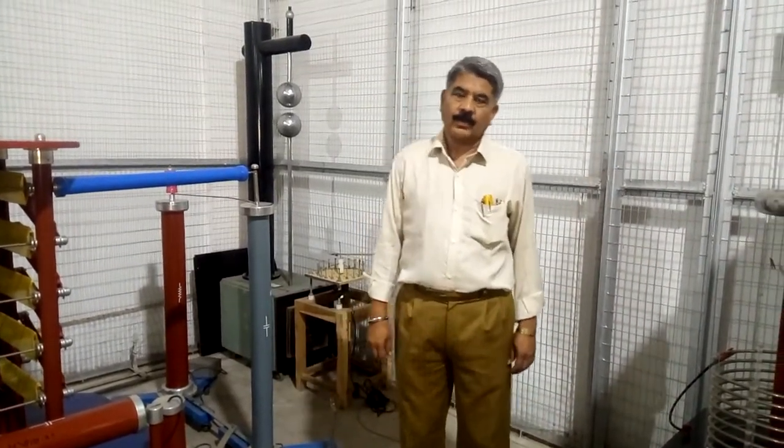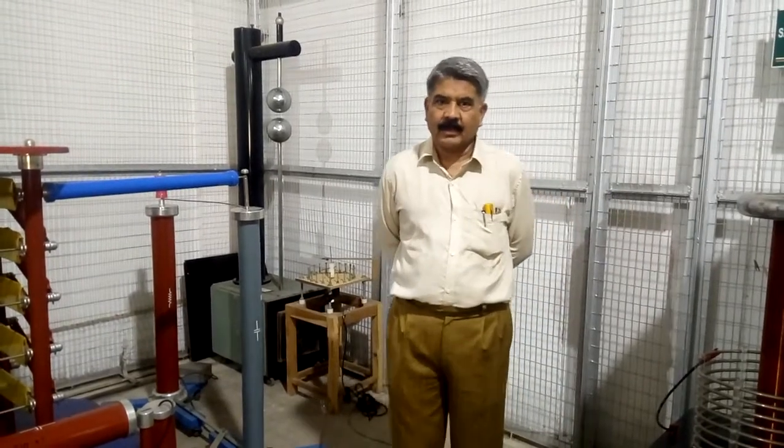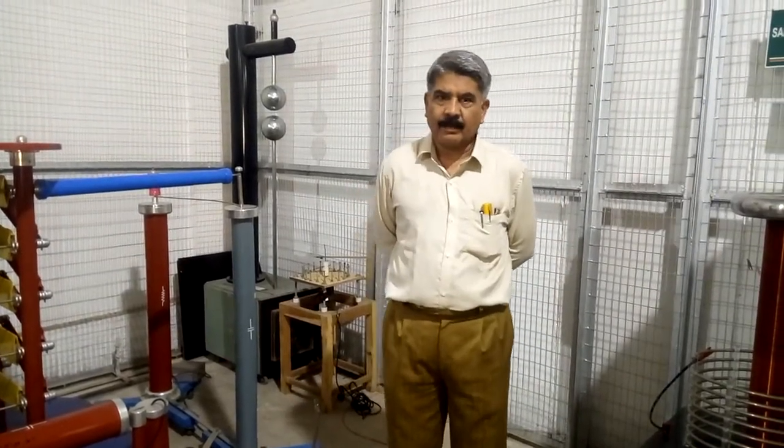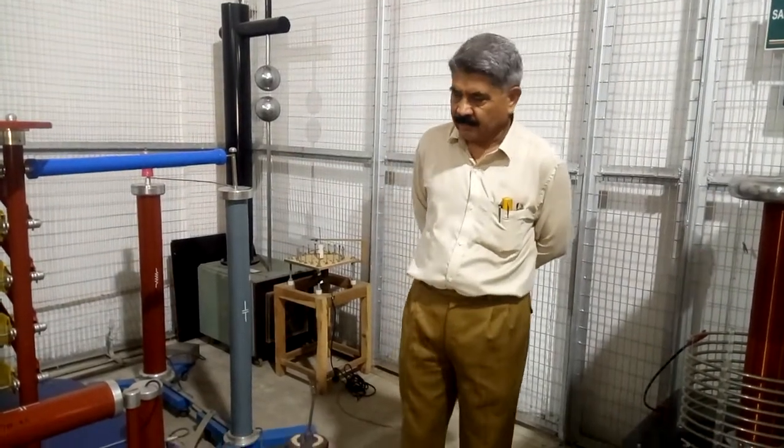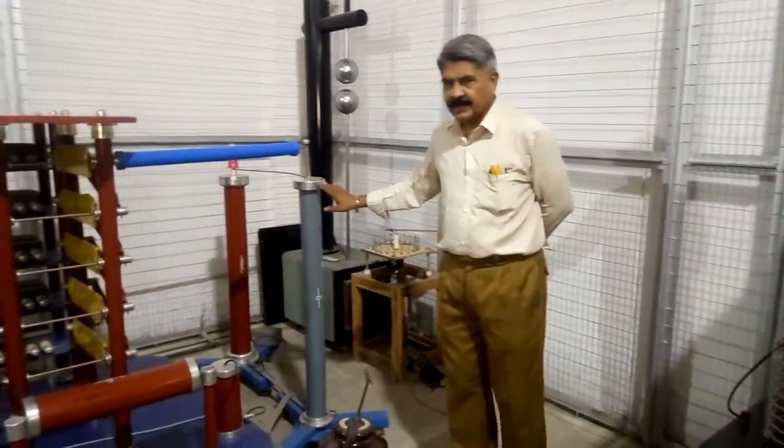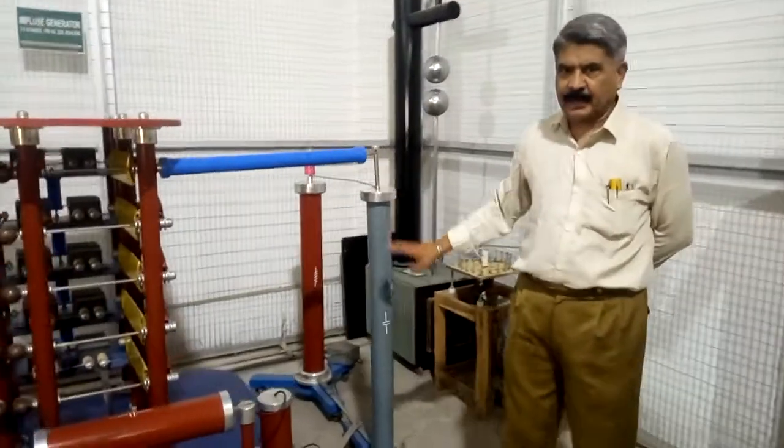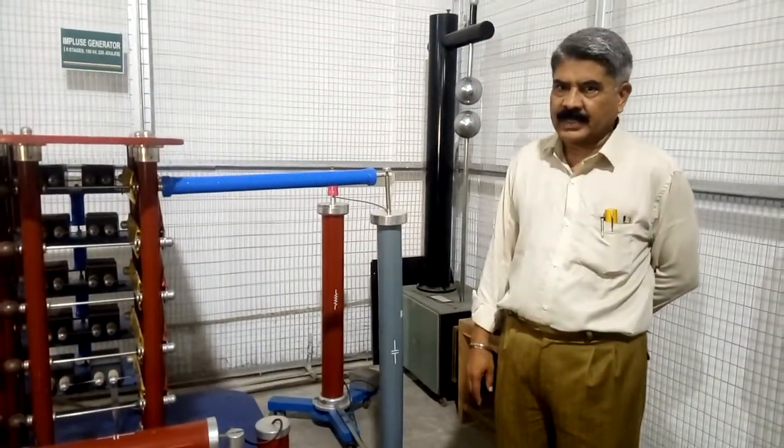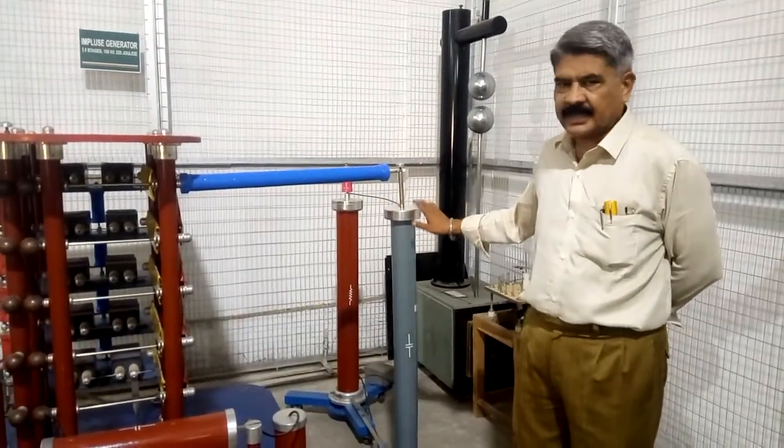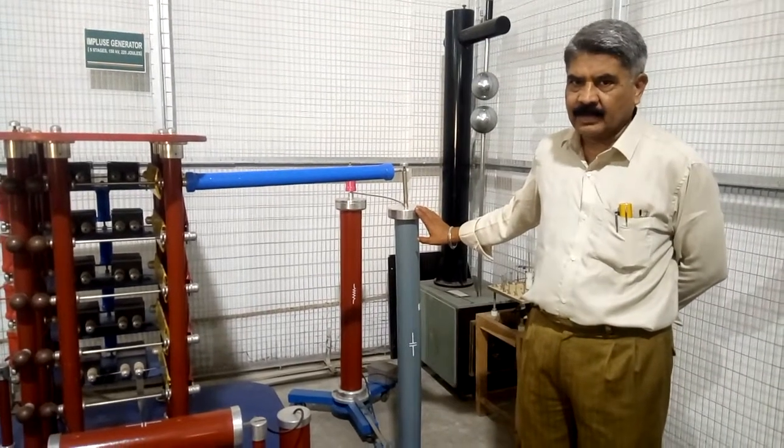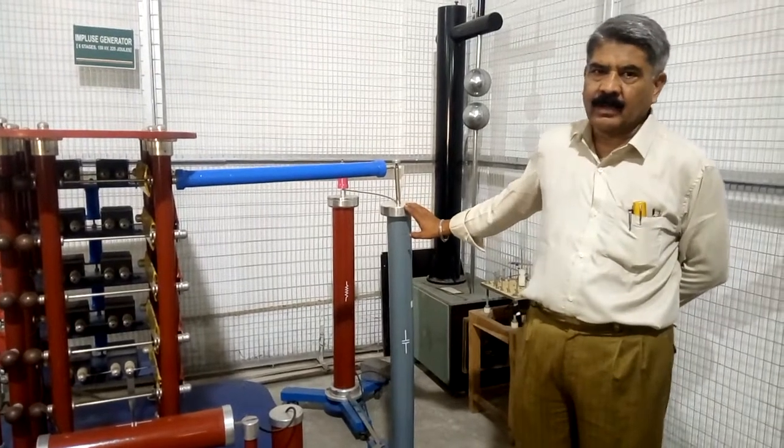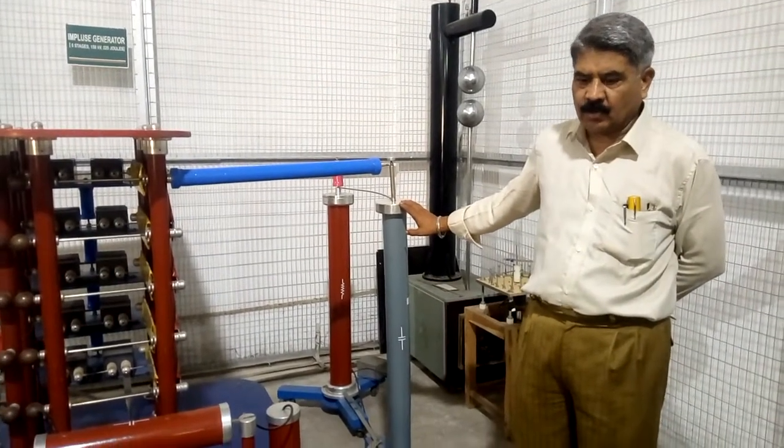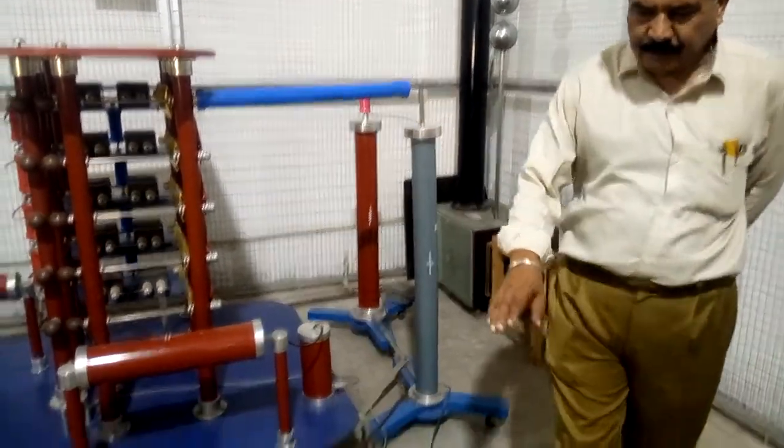Good morning friends. Today we perform the experiment to find the impulse flash over voltage of pin type insulator. This is an impulse generator. In the last experiment I demonstrated how the standard lightning impulse is generated by this impulse generator, how the impulse voltage is measured, and how it is recorded on the digital storage oscilloscope.